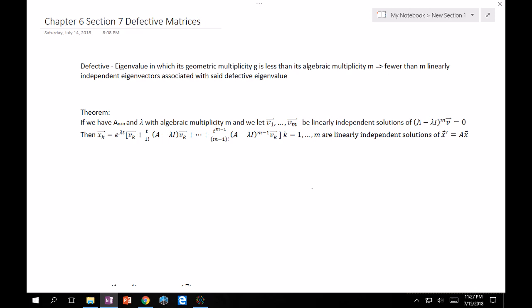And so the theorem is as follows. If we have some A n by n, and it has an eigenvalue with algebraic multiplicity M, and we let V1 all the way to Vm be linearly independent solutions of A minus lambda I to the M, which means you just multiply that matrix onto each other as many times as its algebraic multiplicity. And then, there's solutions of when that final matrix multiplied by some vector is equal to 0. Then, you can form these xk vectors, which are given as follows, just E lambda t times your Vk. So, your first x1 vector would only deal with the V1 vector. And it follows from the infinite series definition of E to the T A.